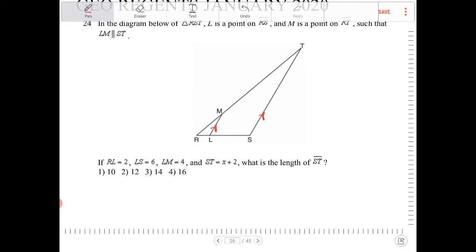And if that's the case, what I'll end up having is two similar triangles, which is what they're trying to go for here. If RL is equal to 2, LS is equal to 6, LM is equal to 4, and ST is equal to X plus 2, what is the length of ST? Okay.